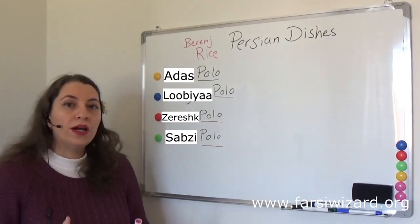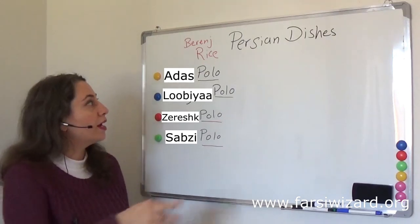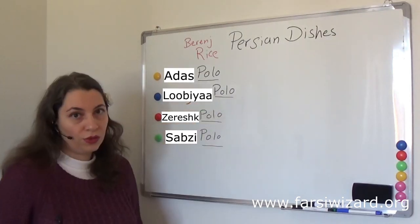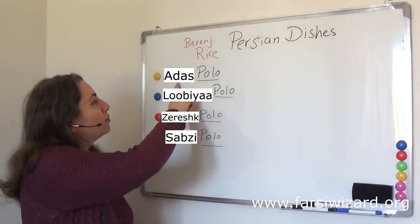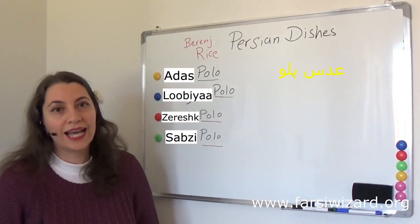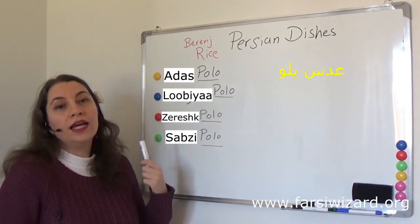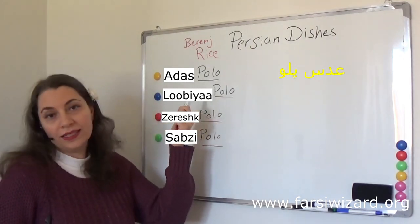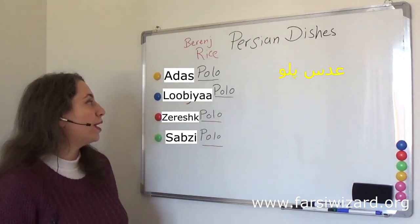Now we have a variety of rice dishes, so depending on what we are going to mix with this rice, we add different words to the word polo. So we have adas polo. What is adas? Adas is lentils. So if you are mixing lentils with rice, we call it adas polo.